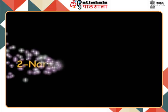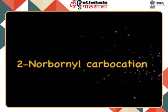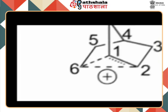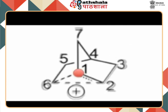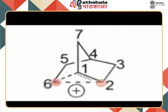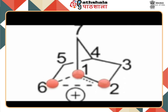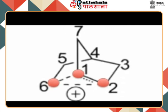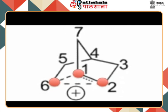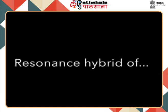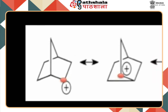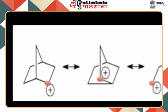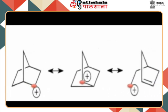Let us consider another example of a non-classical carbocation: the 2-norbornyl cation as shown here. Notice that the positive charge is delocalized over the three carbon atoms labeled as one, two, and six. This is a resonance hybrid of three canonical forms where the positive charge is localized at each of these carbon atoms.